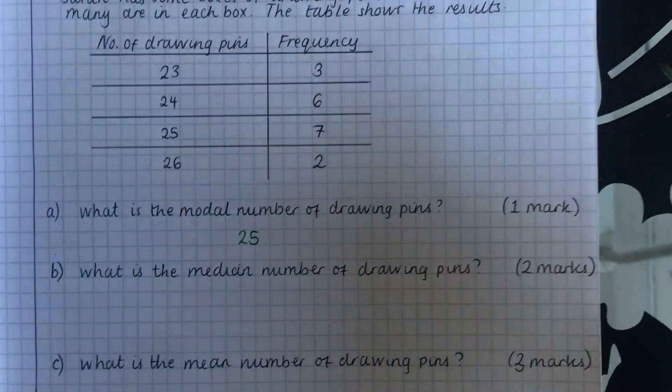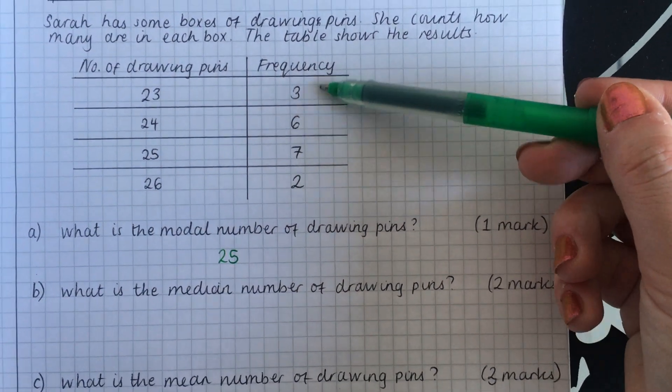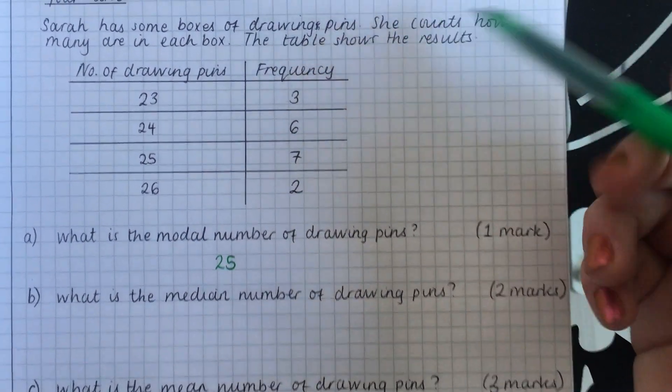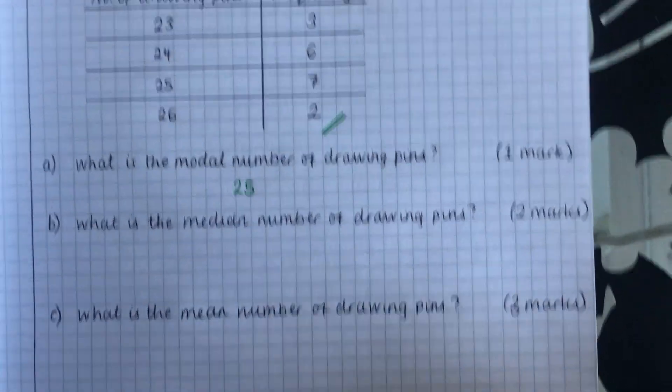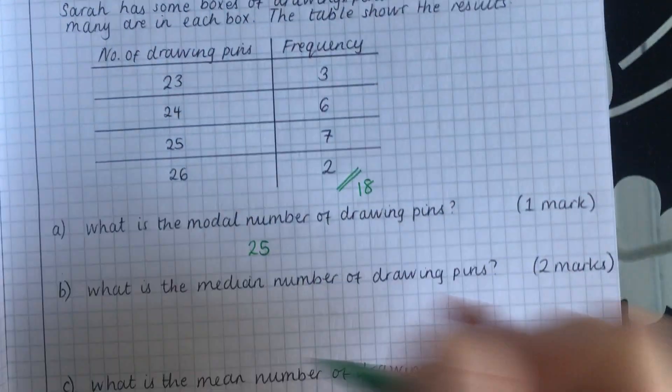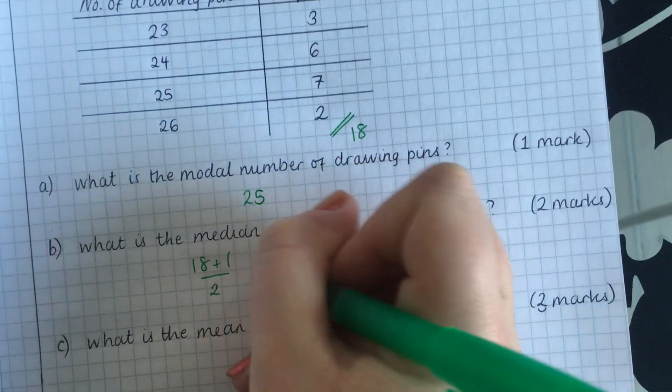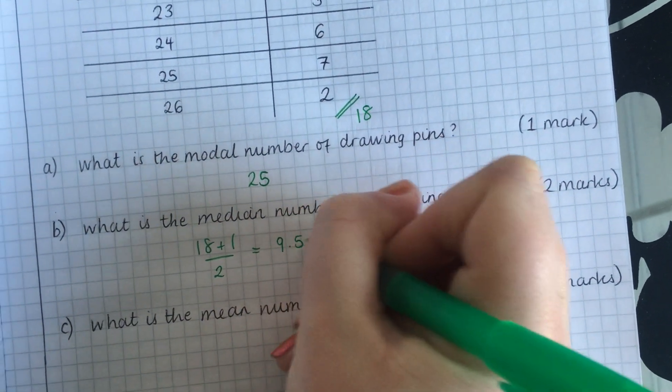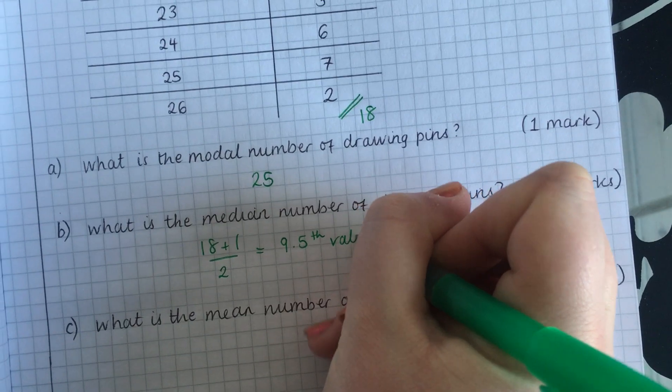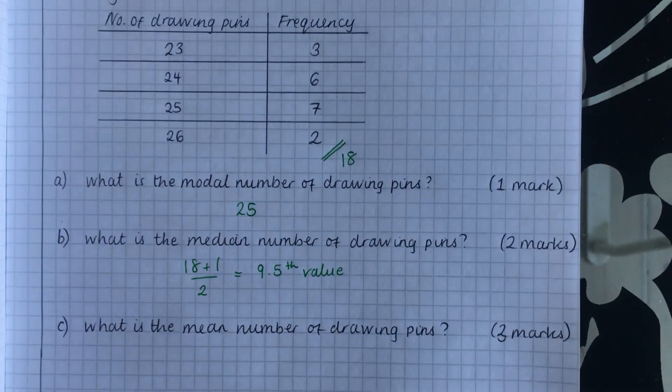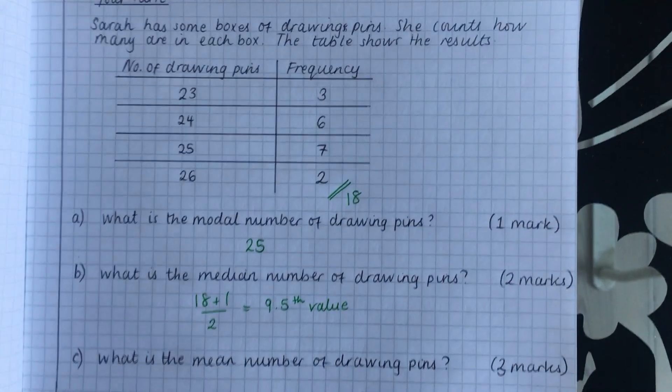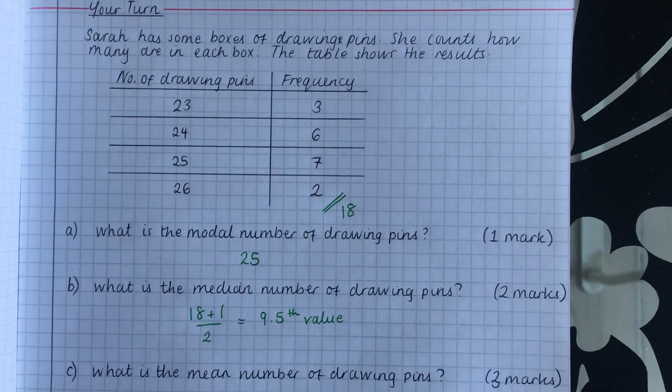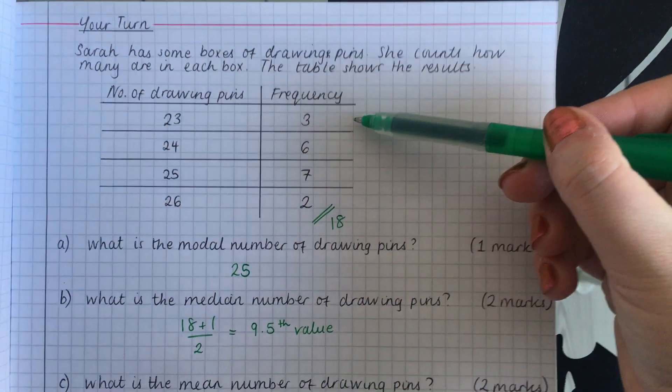Now, the median. We have to add these up and see how many there are all together. So when we add these up, we get 18. And then we have to do 18 plus 1 divided by 2. And we're looking for the 9.5th value. Again, 9.5 is not the answer. It's the value that you're looking for.